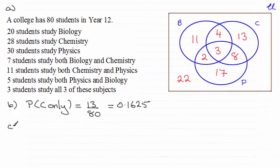Hi. Now for part C of this question we are asked to find the probability of a student studies chemistry or physics or both.